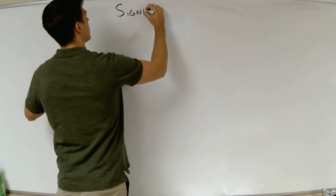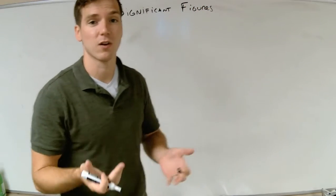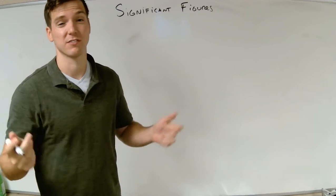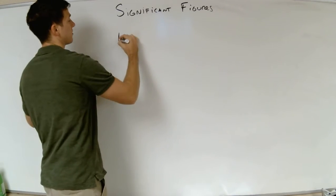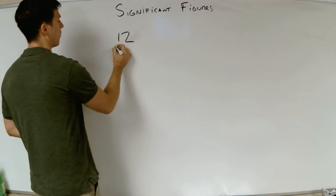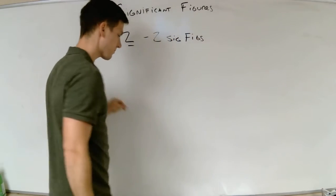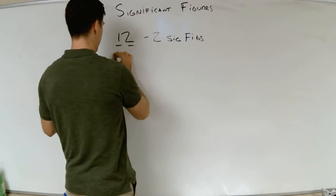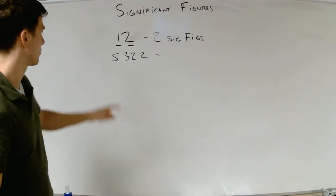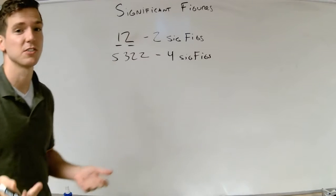We are talking about significant figures. First things first, we have to determine what counts as a significant figure. Any non-zero number is a significant figure — so 1, 2, 3, 4, 5, 6, 7, 8, 9. Those are all significant figures. So if I were to ask you how many significant figures are in the number 12, we count non-zero numbers: 1 and 2, so that has two significant figures. If I give you the number 5,322, how many sig figs? Four — there are four numbers. Four sig figs.